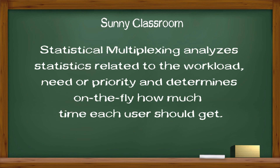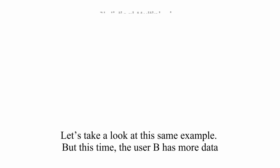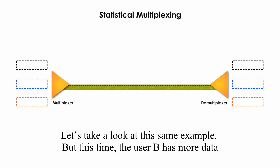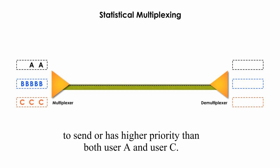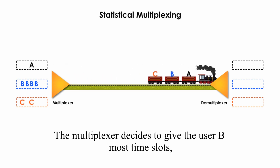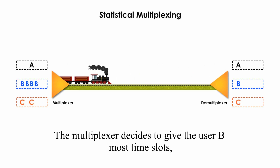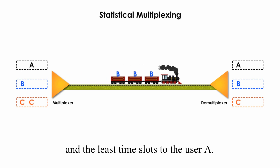Statistical multiplexing analyzes statistics related to workload, need, or priority, and determines on the fly how much time each user should get. Let's take a look at the same example, but this time user B has more data to send or has higher priority than both user A and user C.